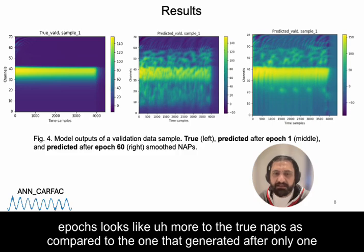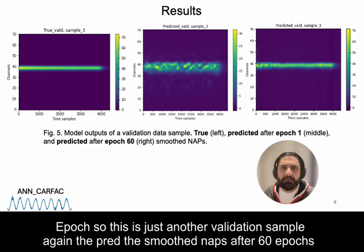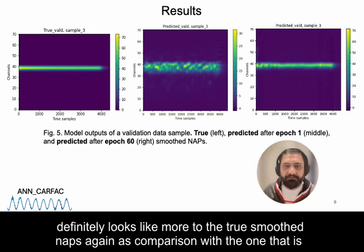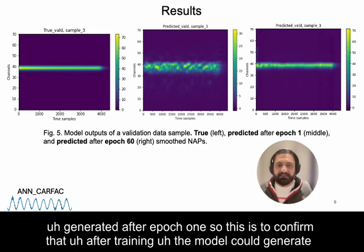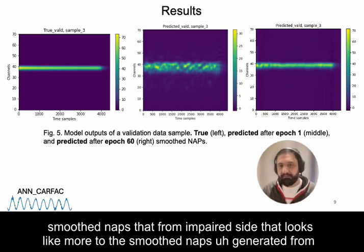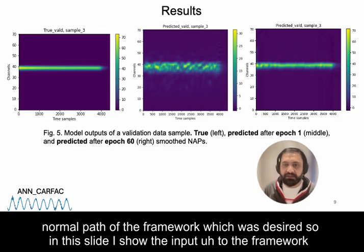As expected, the smoothed NAPs generated after 60 epochs look much closer to the true NAPs compared to those generated after only epoch 1. This is confirmed with another validation sample, where the predicted smoothed NAPs after 60 epochs also more closely resemble the true smoothed NAPs. This confirms that after training, the model can generate smoothed NAPs from the impaired path that closely match those from the normal path.